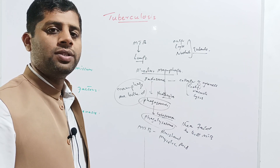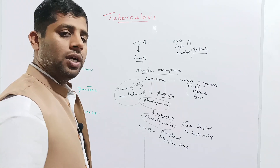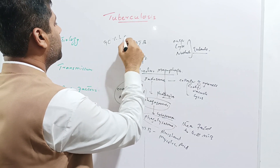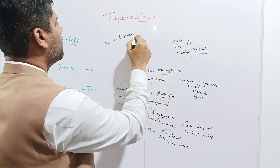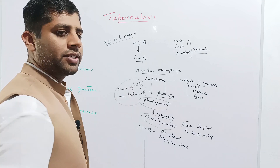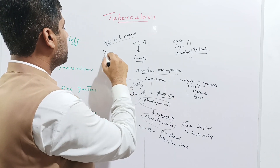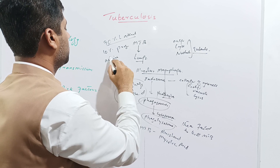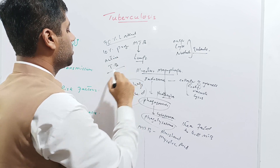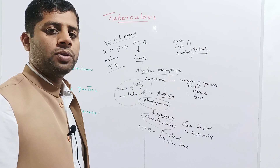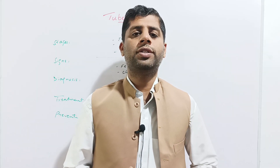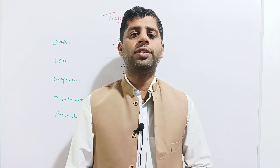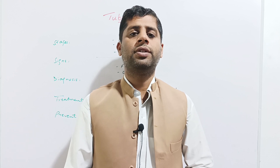When tubercles have developed, the disease is called tuberculosis. It should be kept in mind that 90% of tuberculosis cases are latent, asymptomatic, and non-infectious; however, 10% of cases progress to active TB, where the pathogenesis takes place and the lungs or other body parts are affected. There are three stages of tuberculosis: the exposure stage, latent stage, and active TB stage.